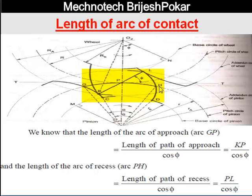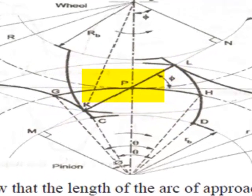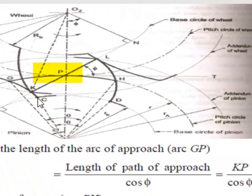In which, GP is also called the arc of approach, as you can see here. GP is also called the arc of approach, and PH is also called the arc of recess. Now this arc of approach GP is equal to — we can write from this figure — the length of path of approach upon cos φ.